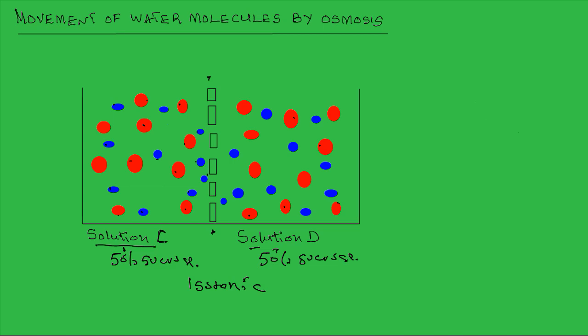So what happens in terms of movement of water molecules? There is an equal number of movements from one side to the other. That is, the same number of molecules will move from solution C to D, and likewise the same number will move from D to C, so that there will be no net gain or loss of water molecules by either of the two solutions. C and D will not gain or lose water.